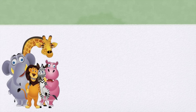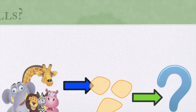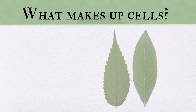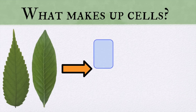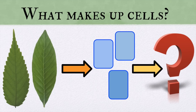Before we get deep into this topic, we are going to learn about what's inside an animal cell. We all know that animals are made out of animal cells, but the real question is: what are animal cells made of? The same goes for plants — leaves are made out of plant cells, but what are plant cells made of? Go ahead and pause this video and write some of your answers down.